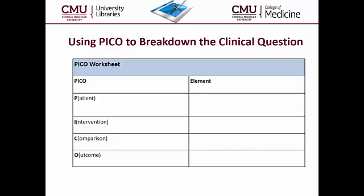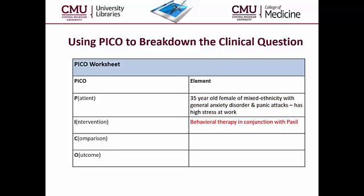Now we will utilize PICO in order to break down this clinical question into smaller elements. First, for P, we describe the patient as fully as possible, keeping in mind the key points for further developing our search strategy later. With I for this case, we will look at the desired intervention.